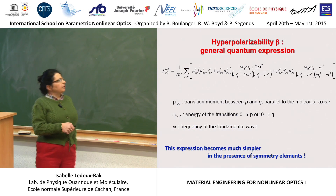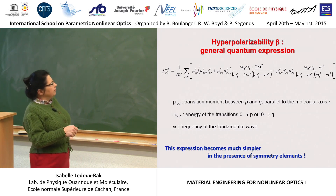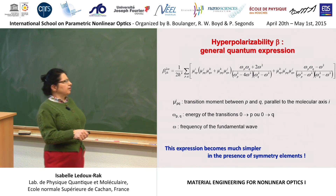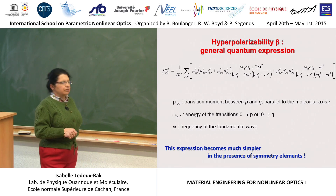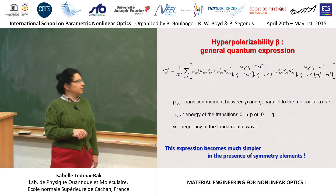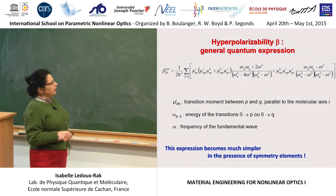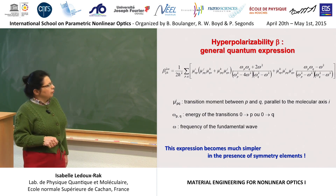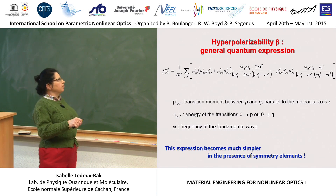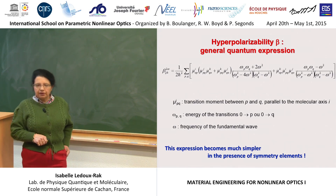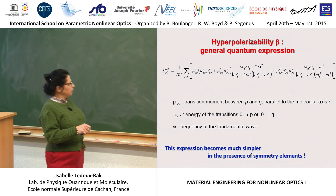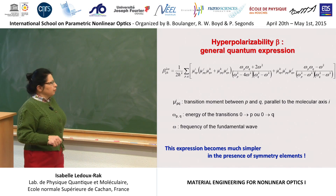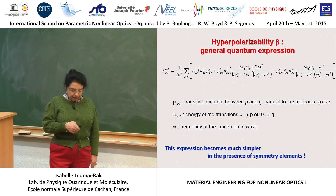Hyperpolarizability can be developed as a general expression which contains some so-called resonant terms, corresponding to the difference between the fundamental frequency of the incident light or its harmonic with respect to the energy of the transitions involved. It also implies transition moments between different levels. For one-dimensional systems, we will limit ourselves to terms parallel to the molecular axis, so beta will be considered as a vector, with the diagonal term being dominant. This expression will become much simpler when adding some symmetry elements.